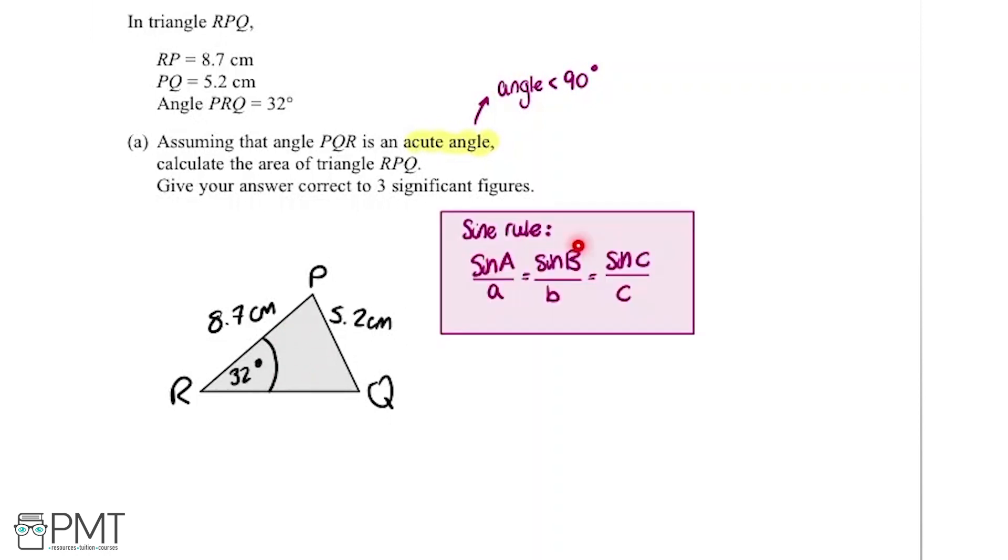For this, I think we can use the sine rule, which I've written out here. The capital letters represent the angles, and the little letters represent the opposite side. So for example, if this was angle A, this would be side A. Using that, I can say sine of 32, the angle we've been told, over the opposite side, which is 5.2 centimeters, equals—I'm going to call this angle that we don't know X—so sine of X over the opposite side to that, which is 8.7.